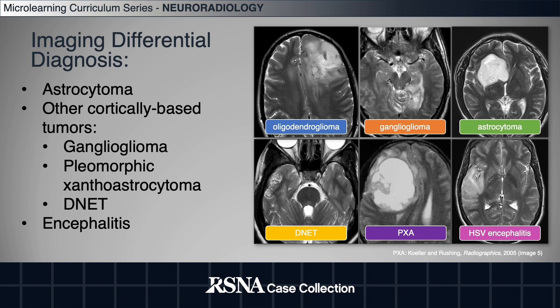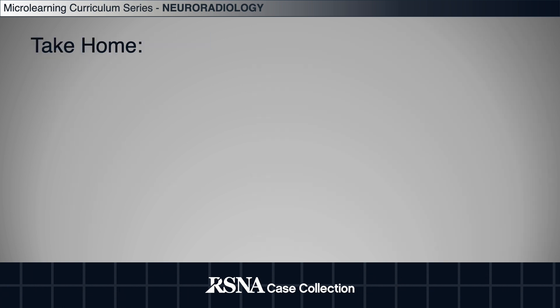The differential is going to include astrocytomas as well as various other cortically-based tumors, such as ganglioglioma, pleomorphic xanthoastrocytoma, and DNET. An acute encephalitis can also appear as mass-like cortical swelling with underlying white matter abnormality and should be considered in some clinical settings.